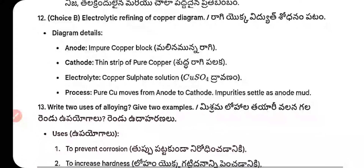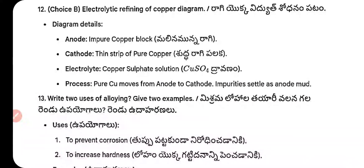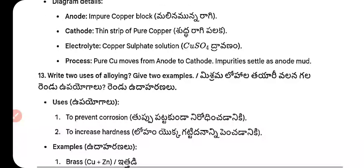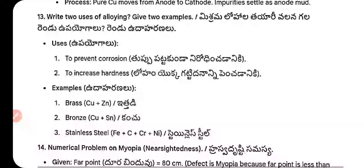Question 13 (internal) — Electrolytic refining of copper: anode is an impure copper block, cathode is a strip of pure copper, electrolyte is copper sulfate solution. Process: pure copper moves from anode to cathode; impurities settle at anode mud.